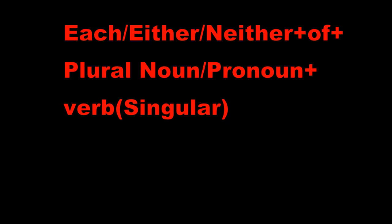The structure for distributive pronouns is: Each, Either, or Neither — followed by a plural noun or plural pronoun — then a singular verb.